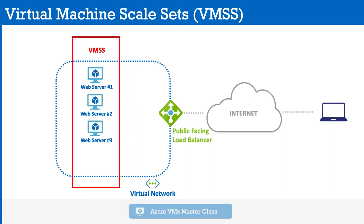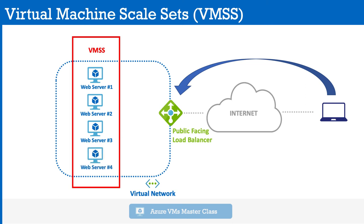We also have a public-facing load balancer that receives connections from customers. When customers want to connect to the website, they hit the load balancer, which takes the HTTP connection and distributes traffic across the web servers. When traffic increases, a new web server is automatically added to the VMSS and the load balancer splits traffic across all four servers. When traffic decreases, servers can be shut down, and the load balancer distributes traffic to only the remaining servers. This is the technology behind the Black Friday scaling example.